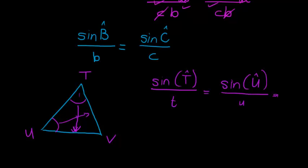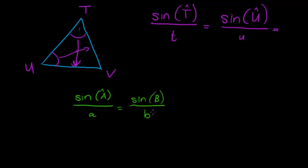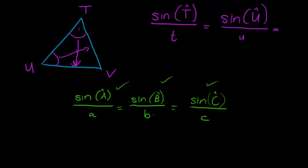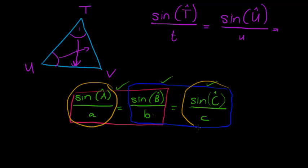On a formula sheet, this is usually written as: sine of angle A over a equals sine of angle B over b equals sine of angle C over c. But remember, this is not a single equation — it's a relationship. When you use it, you only use two of them at a time, depending on what information you are given.